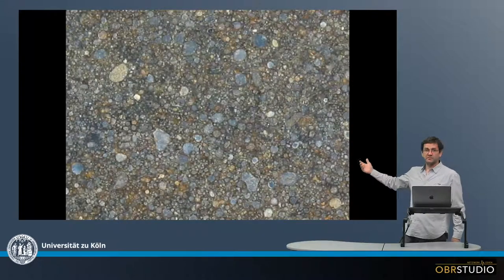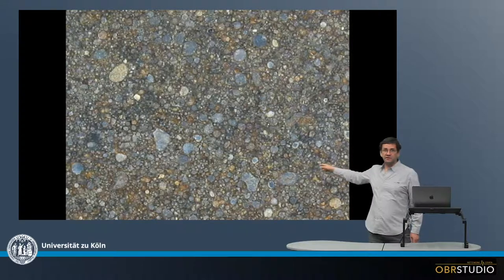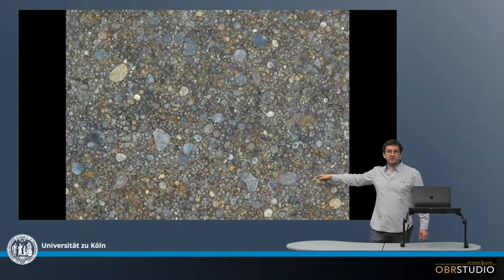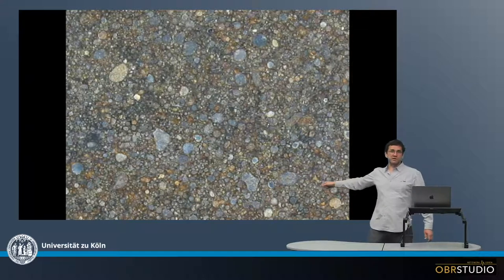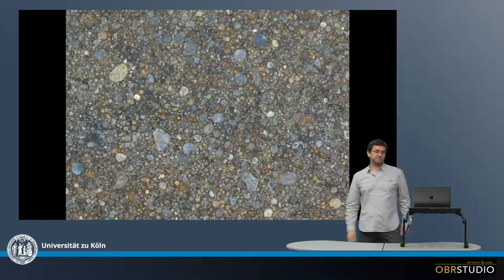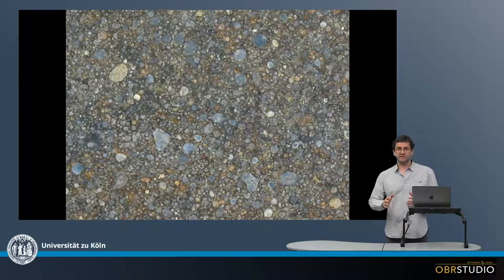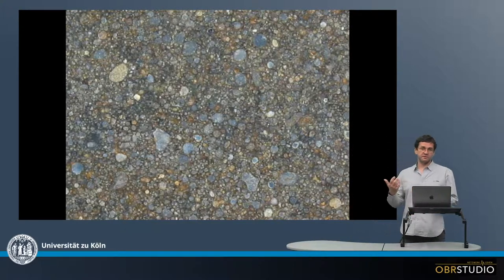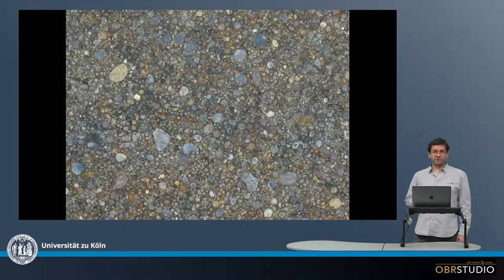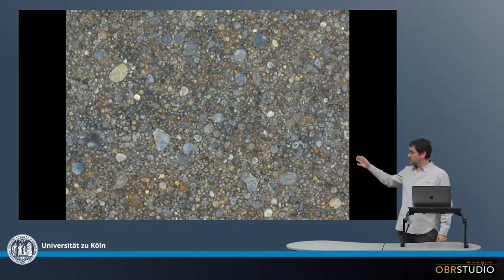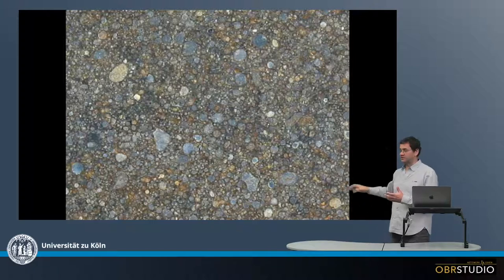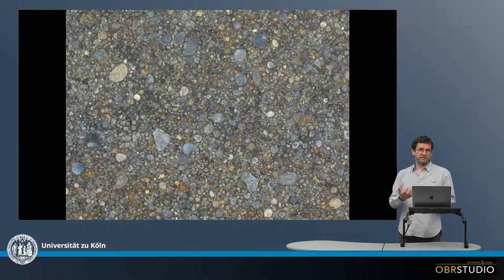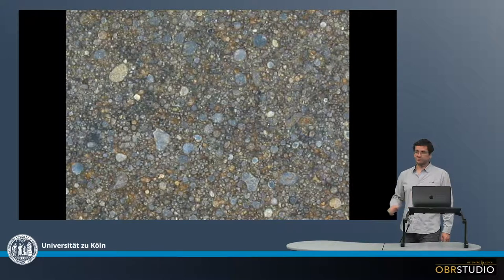This is a close-up from the same meteorite and we can see here all these round objects — quite a large one here, smaller ones over here — all these round objects but also broken ones. These are all the chondrules, and as said, these ordinary chondrites consist of 80 volume percent of these chondrules. Squeezed in between the chondrules is matrix material that is difficult to see because it's quite fine-grained. And then there are a couple of additional components here.